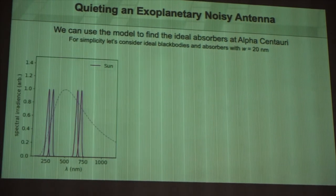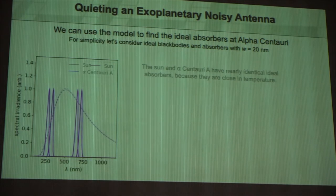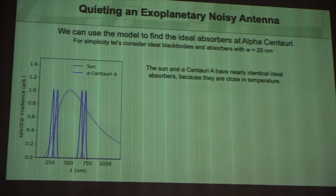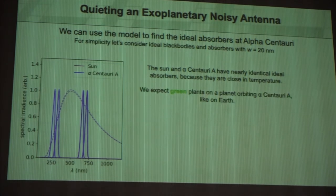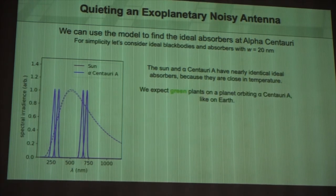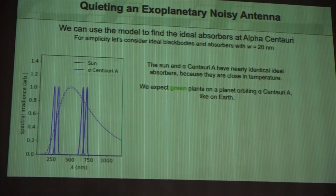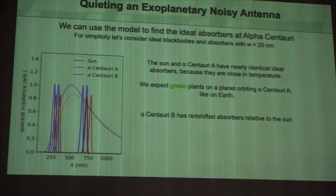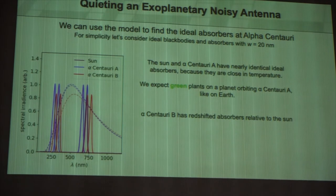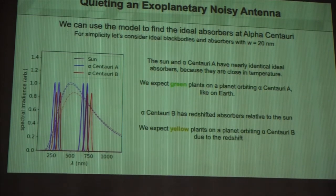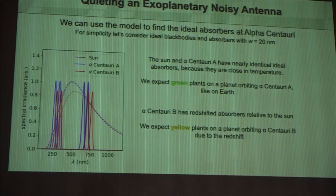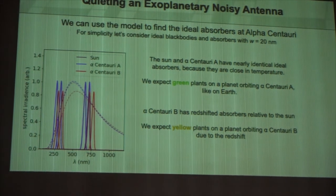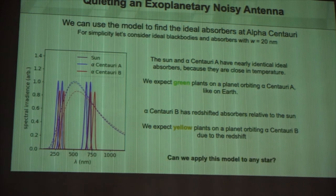So if you look at this, we can do these calculations in lots of different ways. The Sun and Alpha Centauri have nearly identical absorbers inside our model, and so you'd expect something like green plants on a planet near Alpha Centauri A. Alpha Centauri B has red-shifted, so it shifts this model a bit to the red, and so you'd expect kind of yellow plants. Now this all seems like a very simple toy model, but at least on Earth, it has reproduced kind of dozens of different microorganisms.